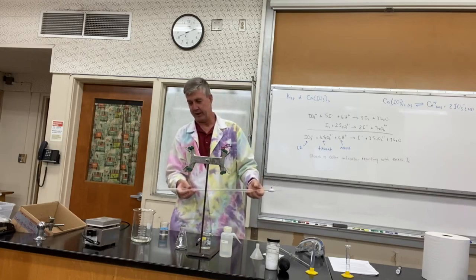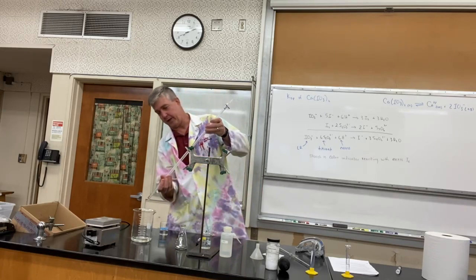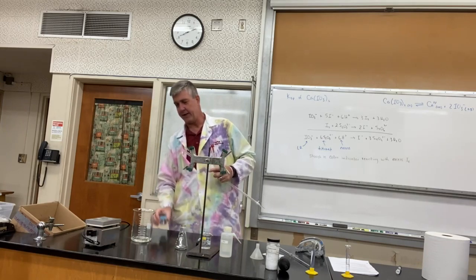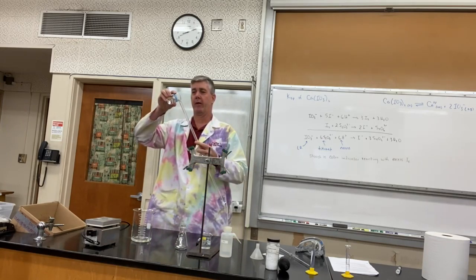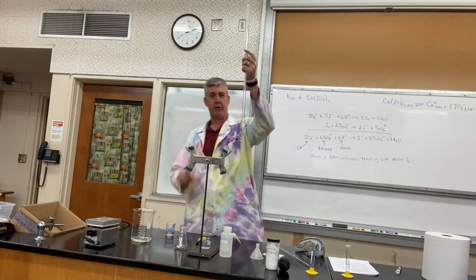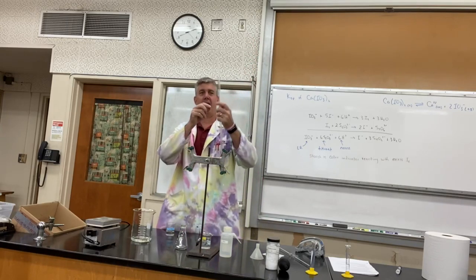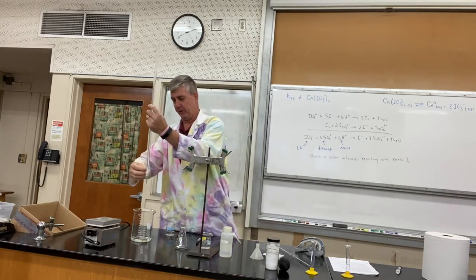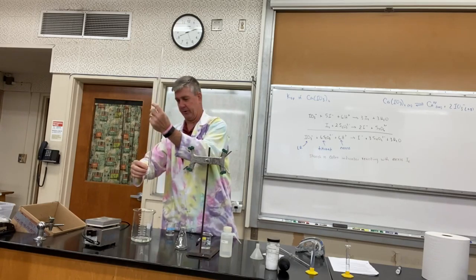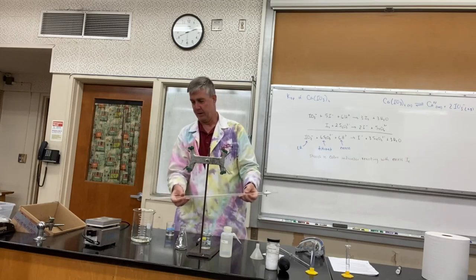We're going to put in just four or five mils of our thiosulfate or the titrant that we're going to be using, and we're just going to rotate and coat the inside of our burette with our titrant. So we're getting rid of the water this way, and as we do this we also want to make sure that we condition the pipette tip as well. We're going to let some of that flow through the burette tip.